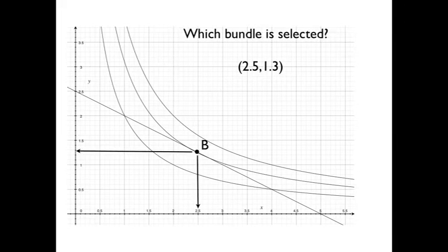So in this one we're going to draw the budget line, and we're going to see which bundle will be picked. I can see 2.5 on the x-axis and something like 1.3 on the y-axis. The point of tangency is going to be at 2.5, 1.3 for us.